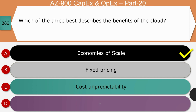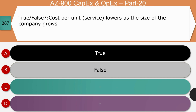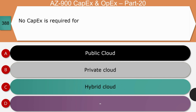True or false: Cost per unit or cost per service lowers as the size of the company grows. The right answer is true. The concept of economies of scale applies here, as we saw in the previous question. So the right answer is option A.